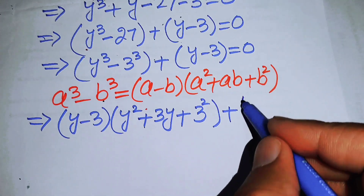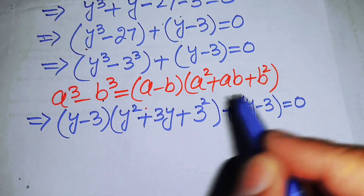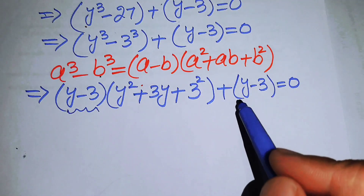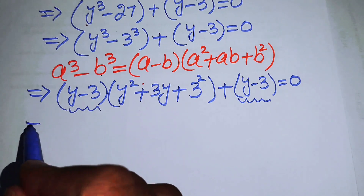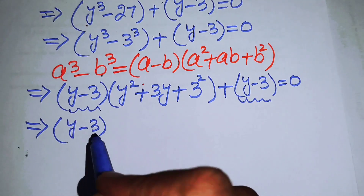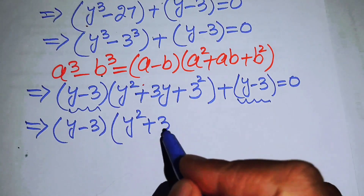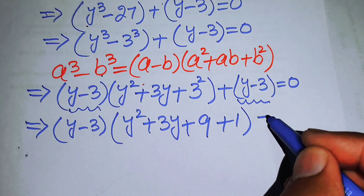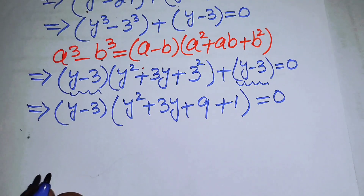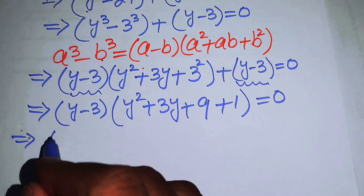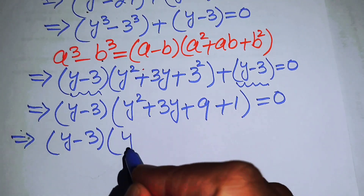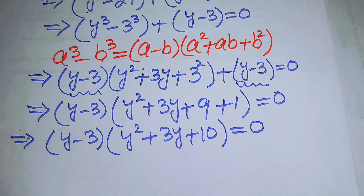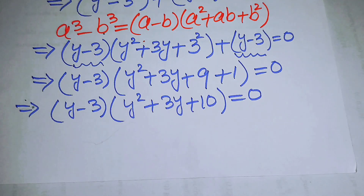We have y minus 3 times y squared plus 3y plus 9, plus y minus 3 equals 0. You can see y minus 3 is present in both terms, so we take it as a common factor: y minus 3 times the quantity y squared plus 3y plus 9 plus 1 equals 0, which simplifies to y minus 3 times y squared plus 3y plus 10 equals 0.